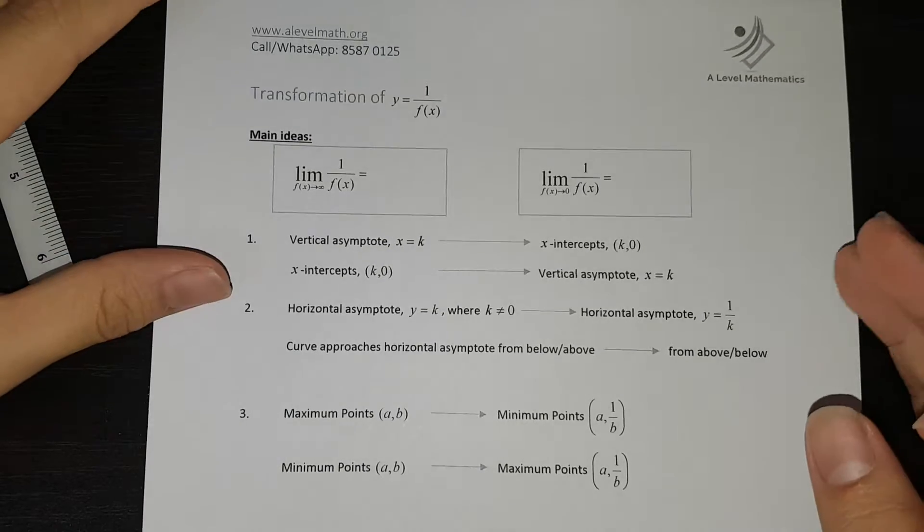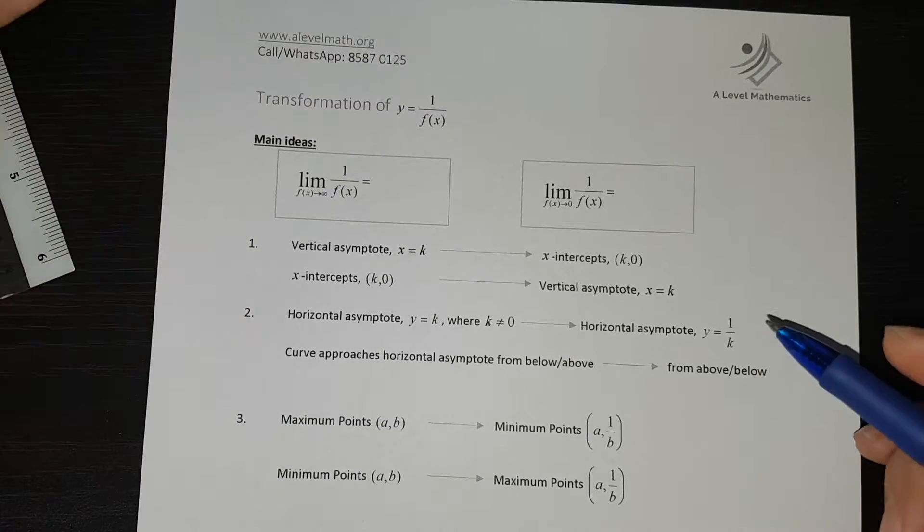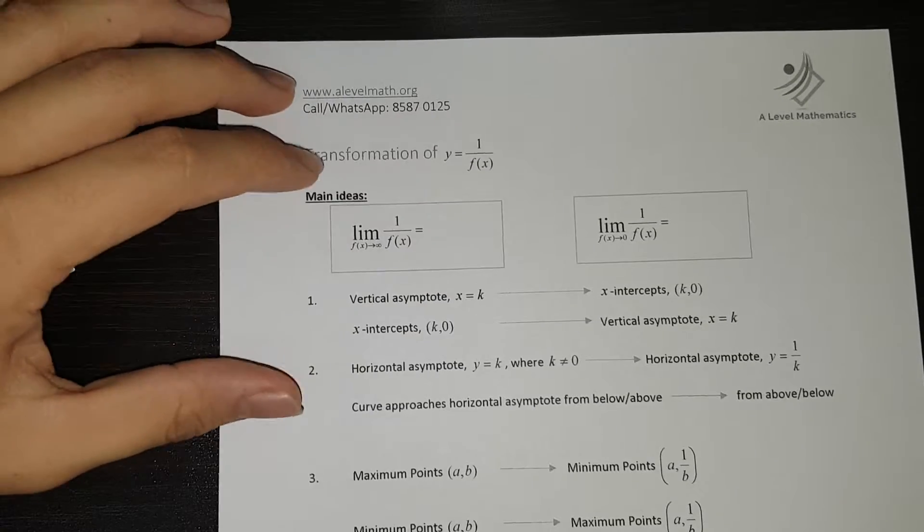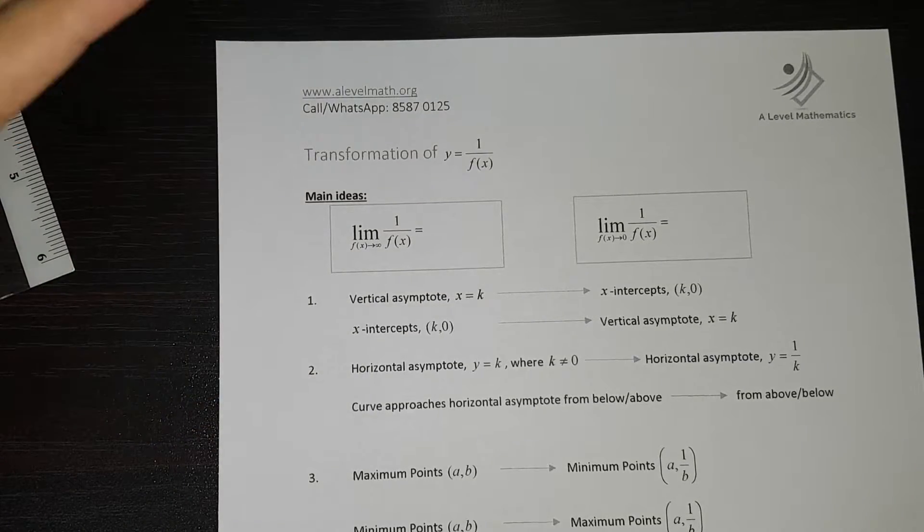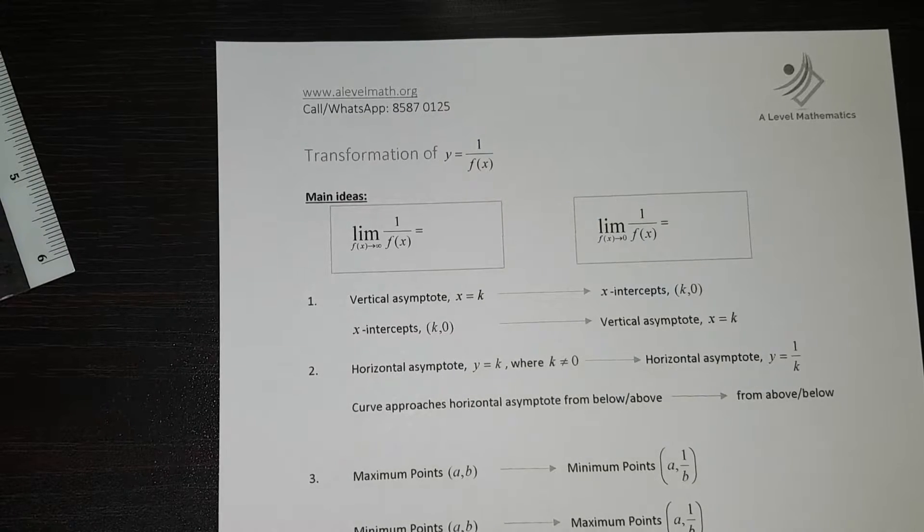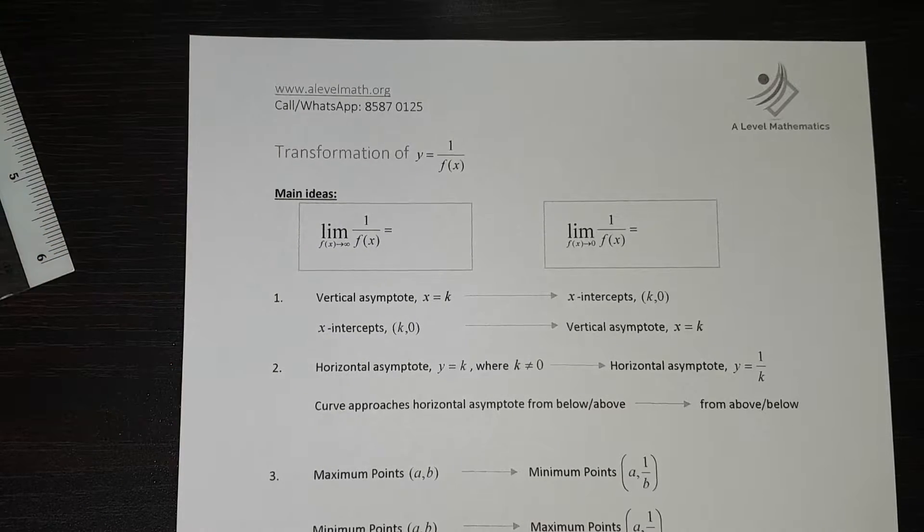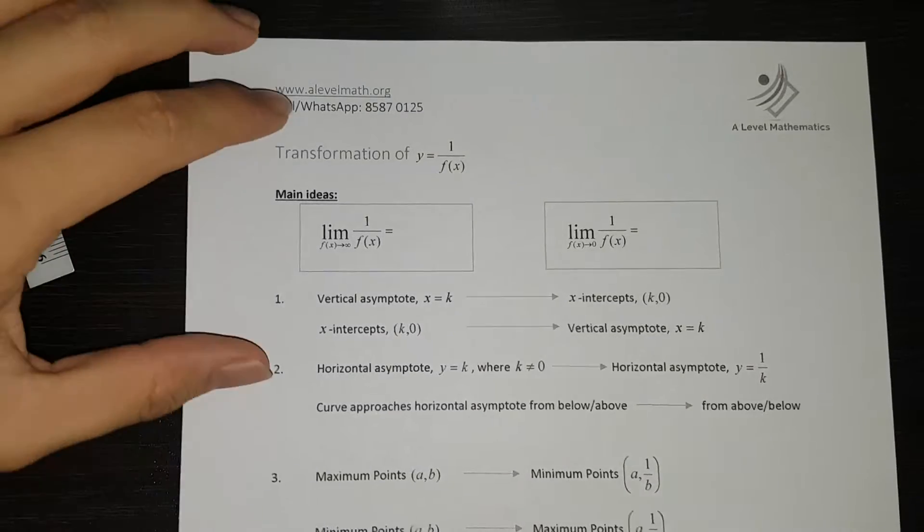After having taught A level tuition for a few years, many years and also being a school teacher a few years, I think that one of the transformation graphs that students struggle the most would be the reciprocal graph. Actually it's not that difficult if you really really understand the concepts behind it. So there are basically two main ideas.